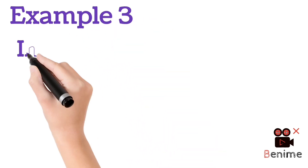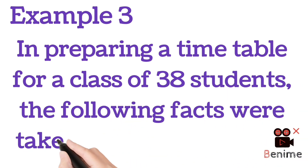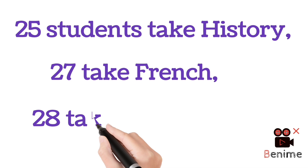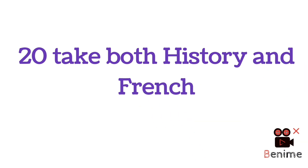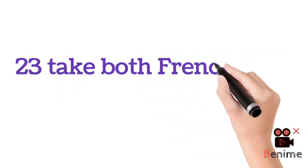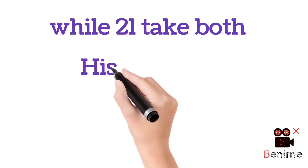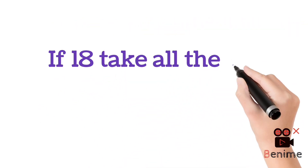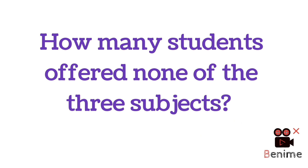Let's go to Example 3. In preparing a timetable for a class of 38 students, the following facts were taken into consideration: 25 students take History, 27 take French, 28 take Agricultural Science, 20 take both History and French, 23 take both French and Agricultural Science, while 21 take both History and Agricultural Science. If 18 students take all 3 subjects, how many students offer none of the 3 subjects?